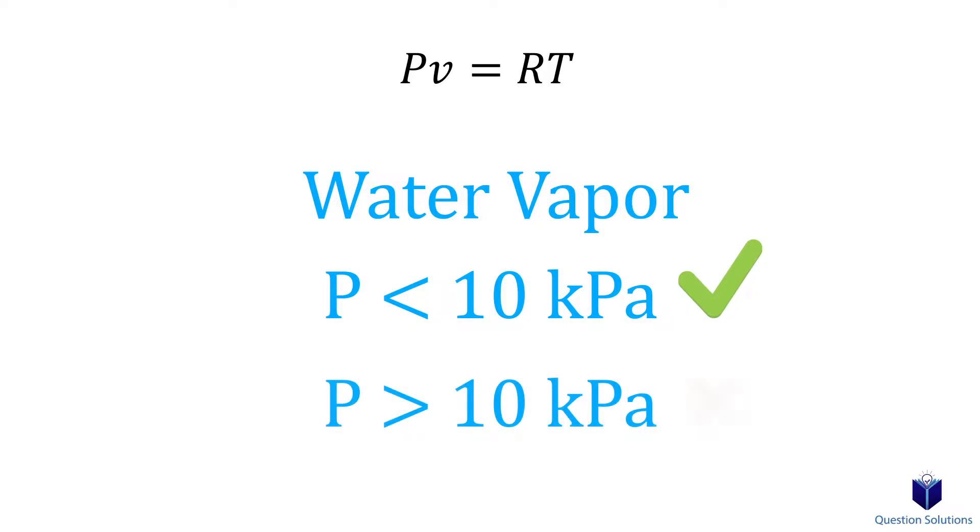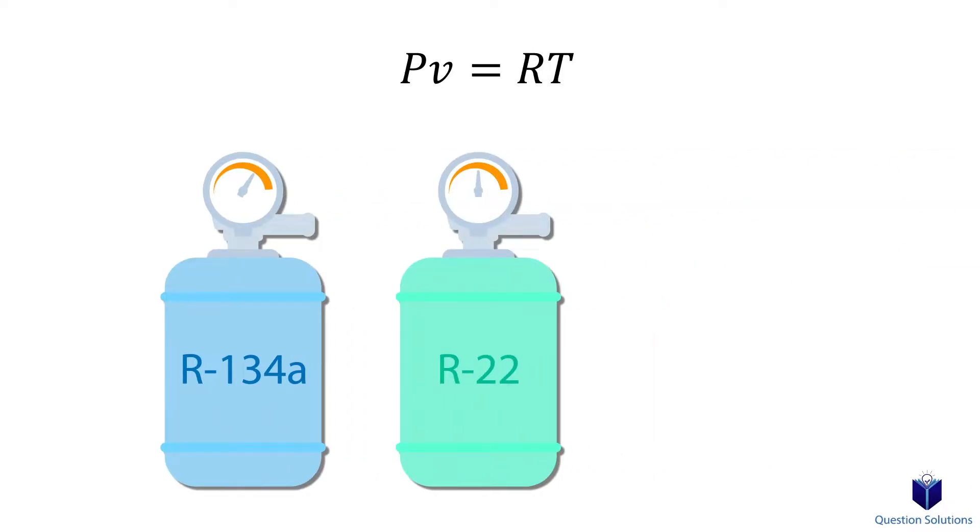However, with higher pressure, the percent error becomes too high, so we have to use property tables. It also doesn't work for refrigerant in fridges, air conditioners, and such.